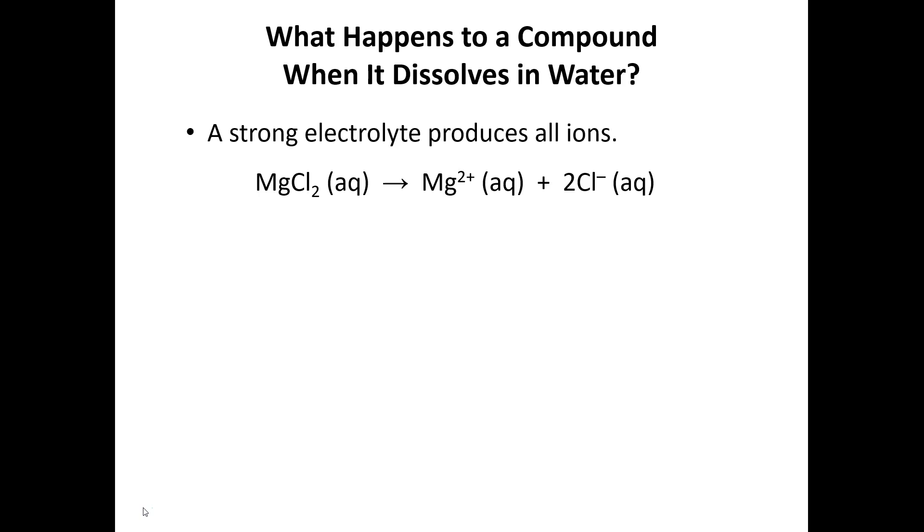The other kind of compound that we have classified as a strong electrolyte is a strong acid, because a strong acid ionizes completely. When we dissolve a strong acid like hydrobromic acid in water, it's going to completely ionize to give us a mole of HBr giving us a mole of hydrogen ions and a mole of bromide ions, and there is none of the HBr molecule remaining intact.